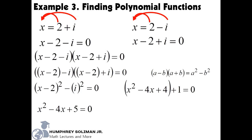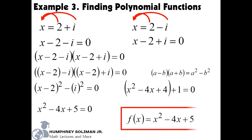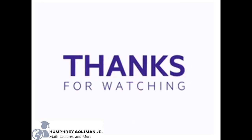Again, if we want, we can write this in function notation. Our final answer is f of x is equal to x squared minus 4x plus 5.